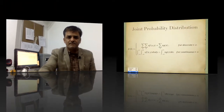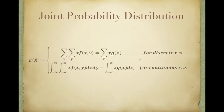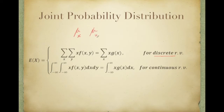Look at the example. In the joint probability distribution, if both the random variables are discrete, then you have to calculate either the expected value of the X variable or the expected value of the Y variable. So if you are calculating for the X variable, first of all we have to find out the marginal probability density function.